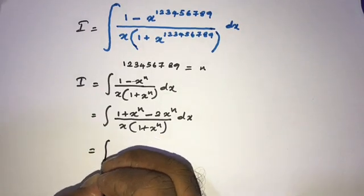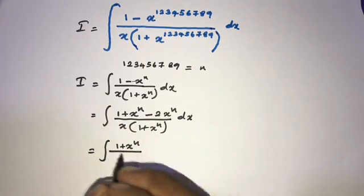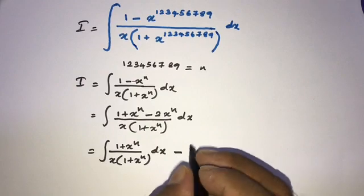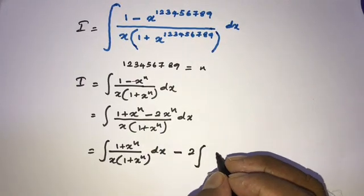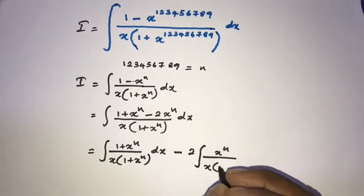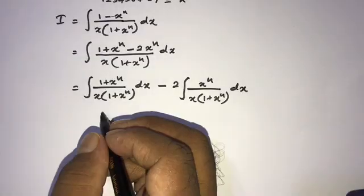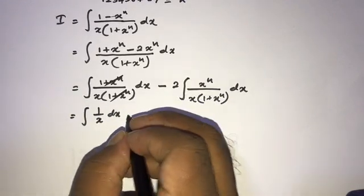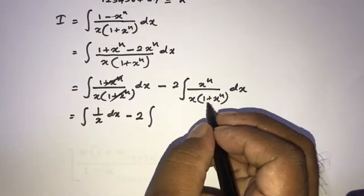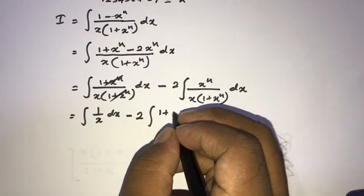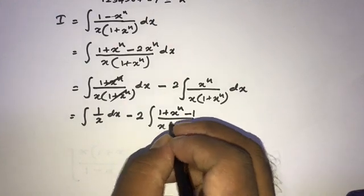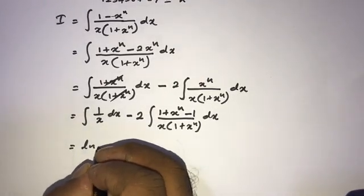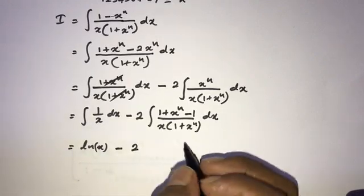Now we can split this into two separate integrals: the integral of (1 plus x^n) over x times (1 plus x^n) dx, minus 2 times the integral of x^n over x times (1 plus x^n) dx. In the first integral, (1 plus x^n) cancels, giving the integral of 1/x dx, which equals the natural log of x.